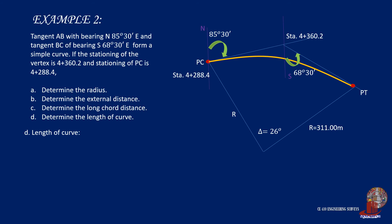The length of the curve is computed as L equals delta times R. Do not forget to convert radians into degrees, with the conversion pi equals 180 degrees. By substituting delta and radius R, L is computed as 141.13 meters.